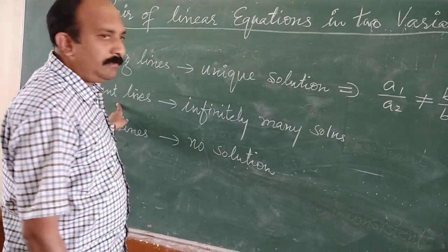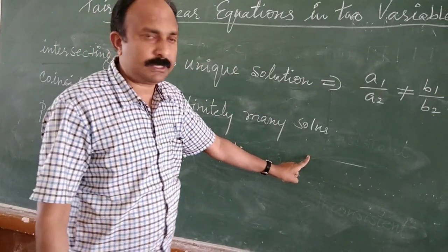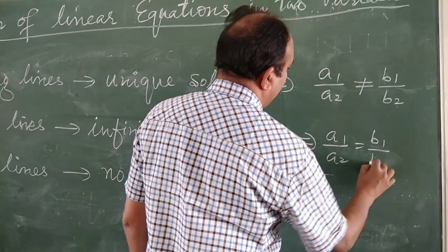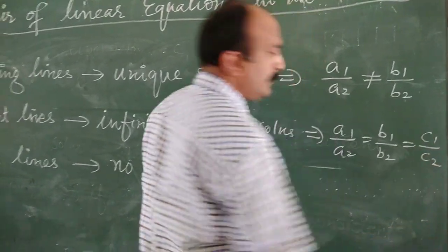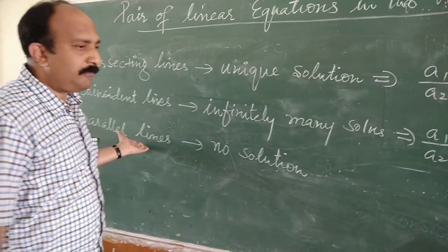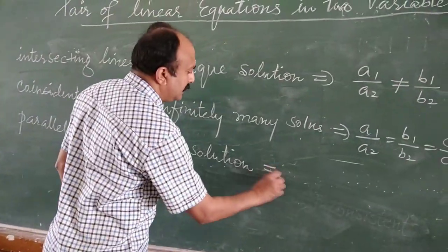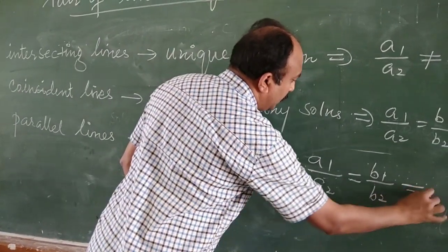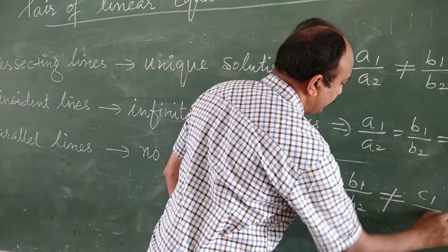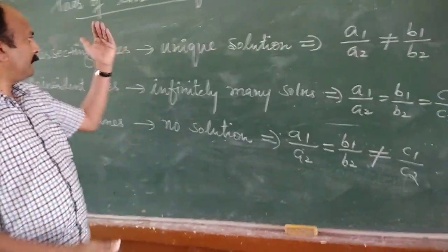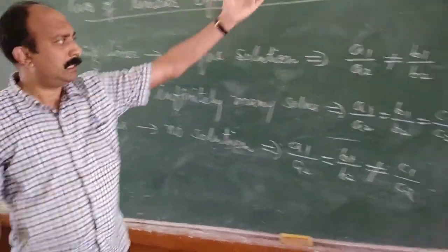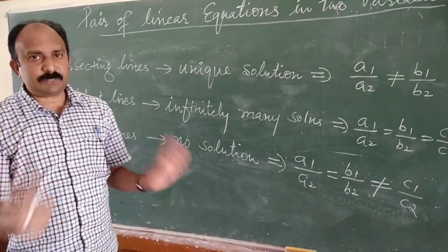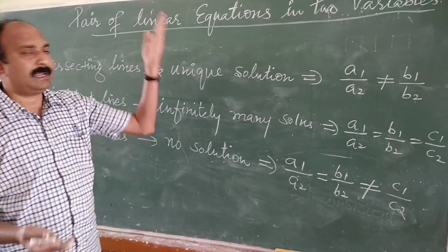Similarly, if the graph represents coincident lines, it has infinitely many solutions, and in that case a1 upon a2 equals b1 upon b2 equals c1 upon c2. This is the combination of graphical representation, type of solution, and coefficient relations. Now we are going to study the first method of solving a pair of linear equations — that is, by using the graphical method.